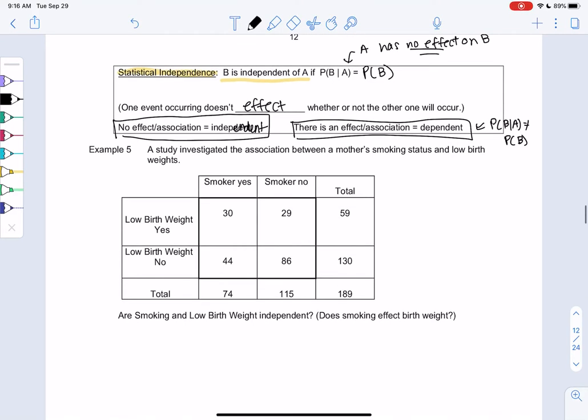So let's look at an example. We have a study investigated the association between mother's smoking status and low birth weights. We might know already that these have some sort of effect on each other. So because there is an effect, I think we'll probably show that they are dependent.